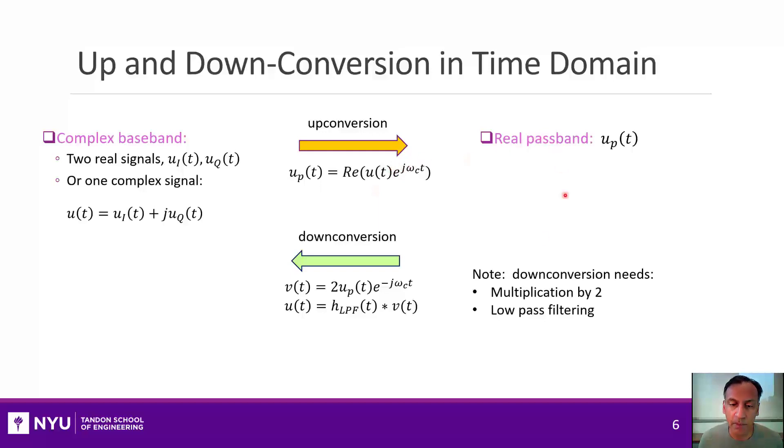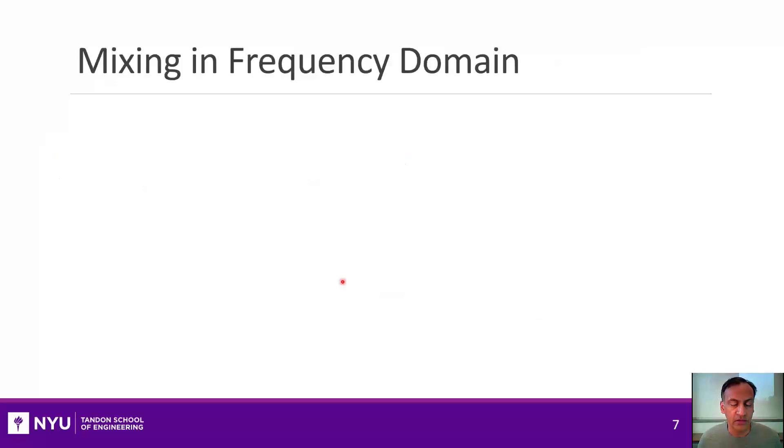And then you can get back the complex baseband signal by multiplying by the negative of that frequency and then doing some low-pass filtering. Remember that under this convention, you need this multiplication by two. Of course, in reality, there will be other gains, so you will end up with a scaled version of the original transmitted signal. All right, that was the mixing or up-and-down conversion in time domain.